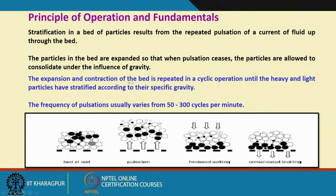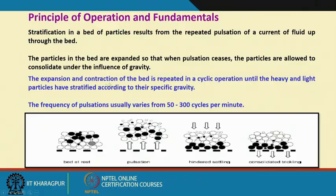The expansion and contraction of the bed is repeated — one complete pulsation and suction is called one cycle. One cycle may not be sufficient for the particles to reorient themselves based on their mass. You have to do it repeatedly for some time so they are segregated in the desired form. The expansion and contraction is repeated in cyclic operation until the heavy and light particles have stratified according to their specific gravity.